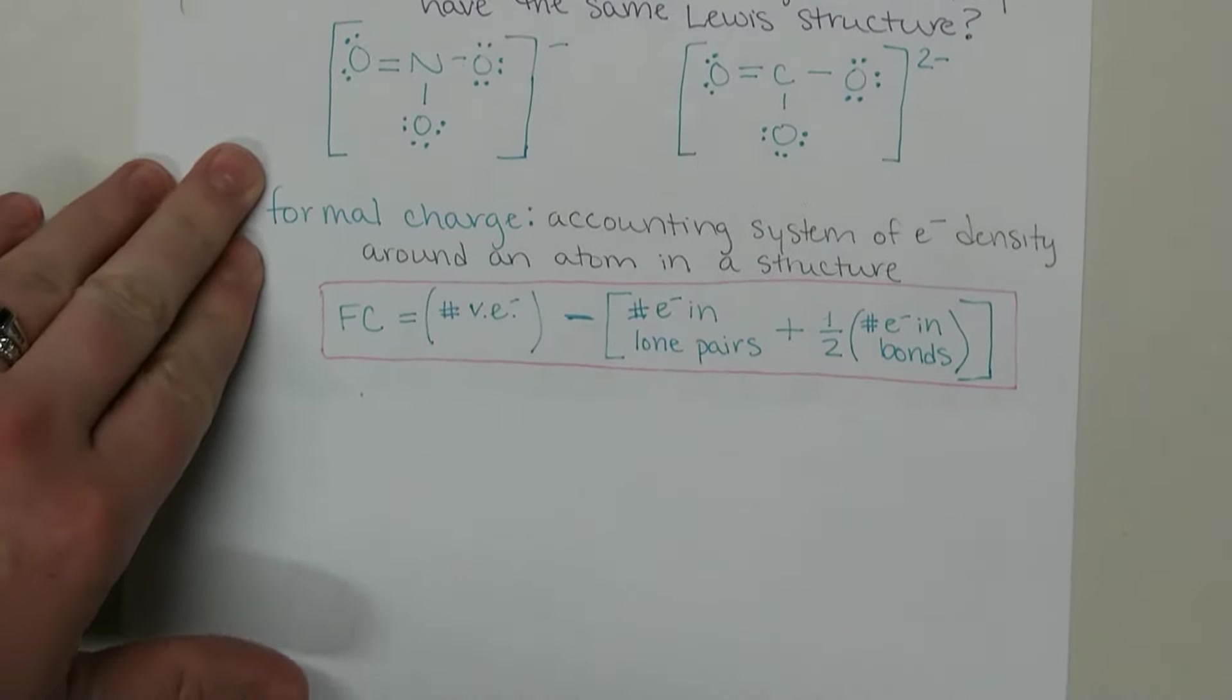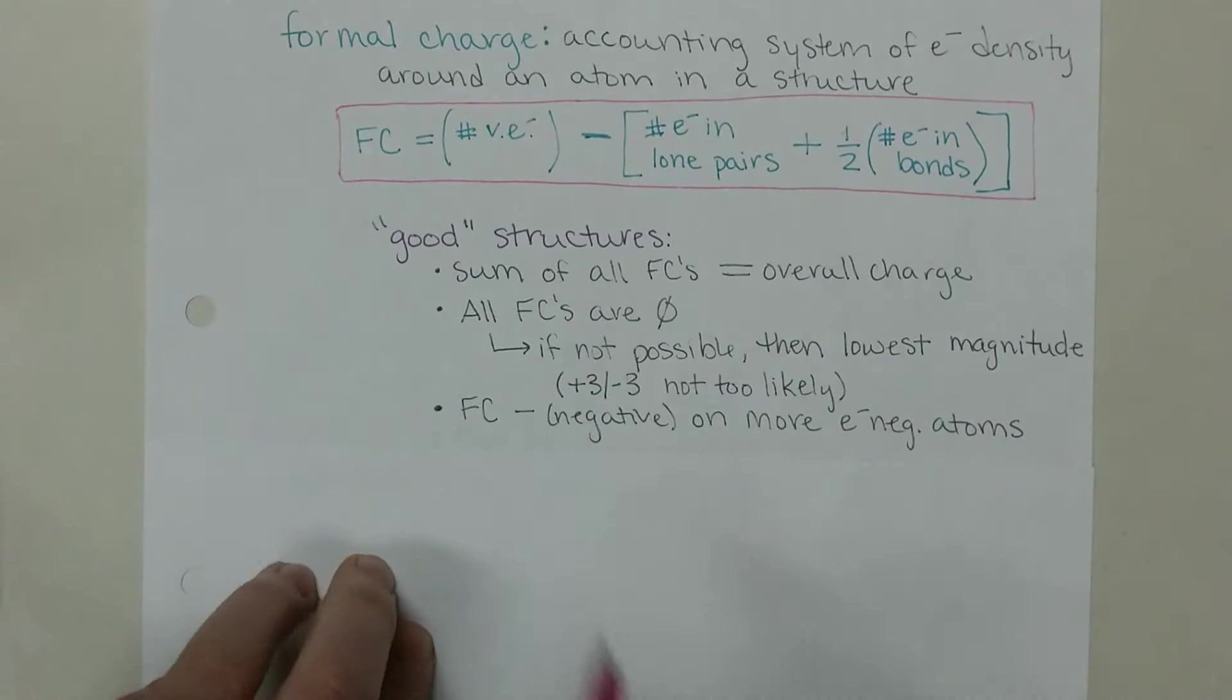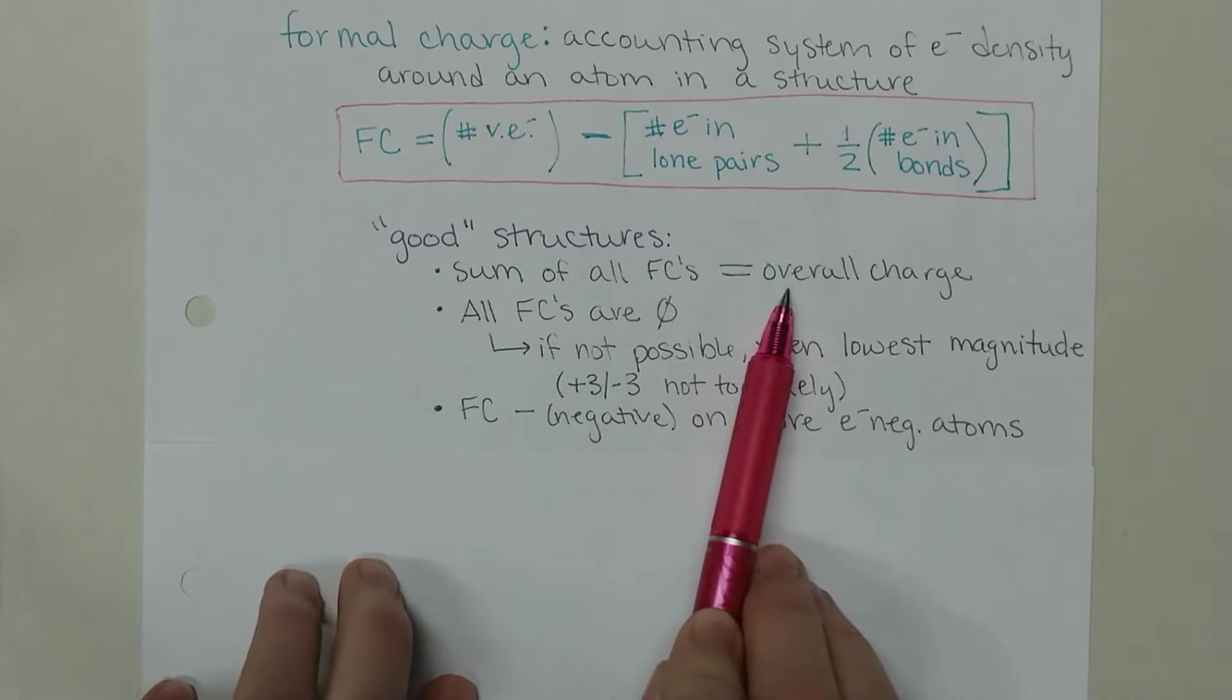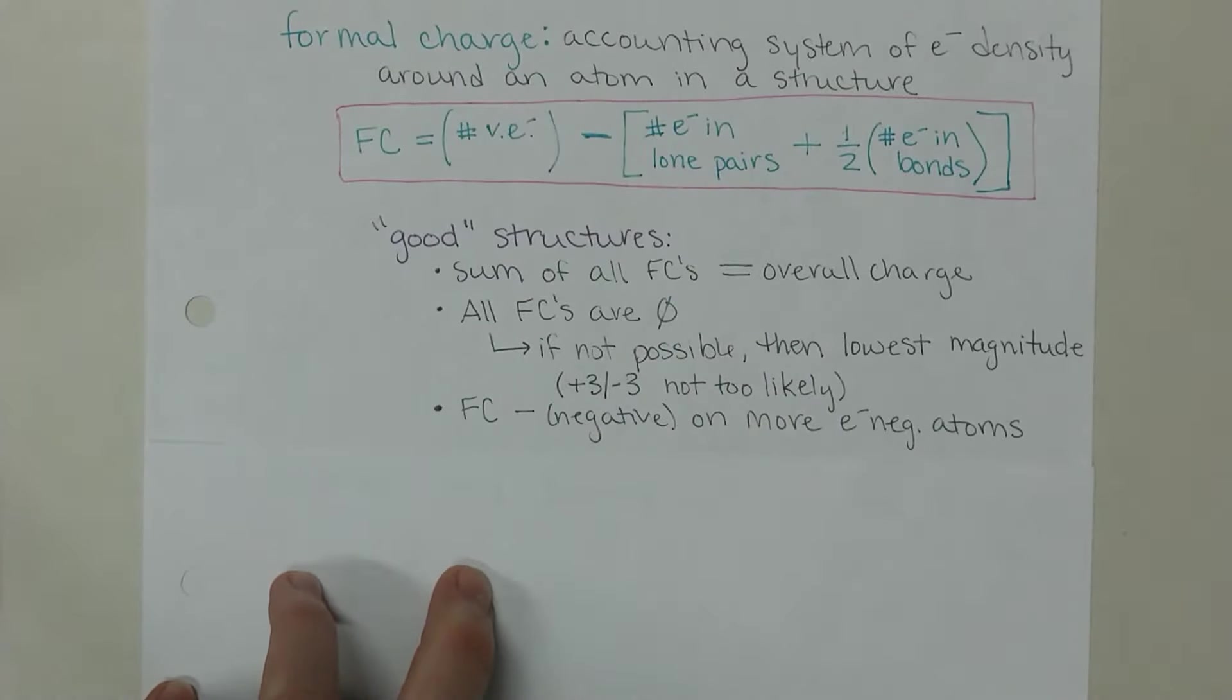What makes a good Lewis structure? The sum of all of our formal charges needs to equal the overall charge on that molecule. We will do the nitrate and carbonate examples momentarily. Ideally all formal charges are zero. This means that the atom is making the number of bonds that it wants to and sharing the appropriate number of electrons that it wants to once it achieves its octet.